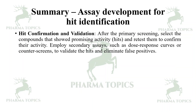After the primary screening, compounds that show promising activity are called hits. Retest them to confirm their activity. You employ secondary assays such as dose-response curves or counter screens to validate the hits and eliminate false positives.